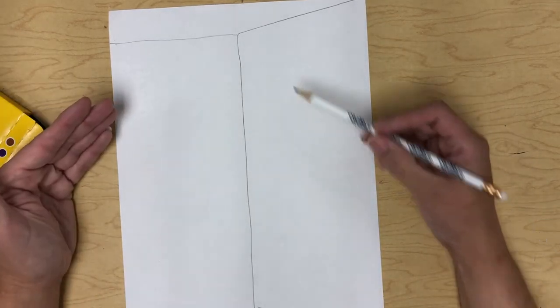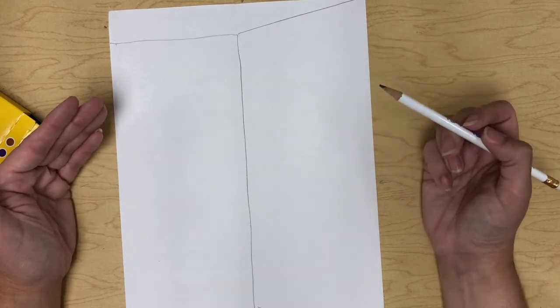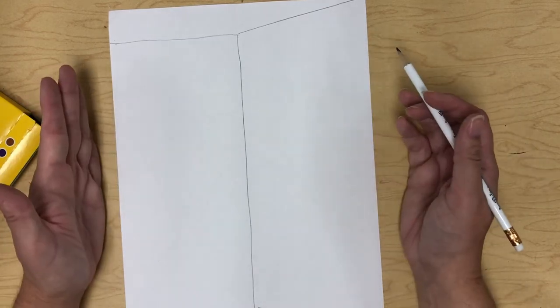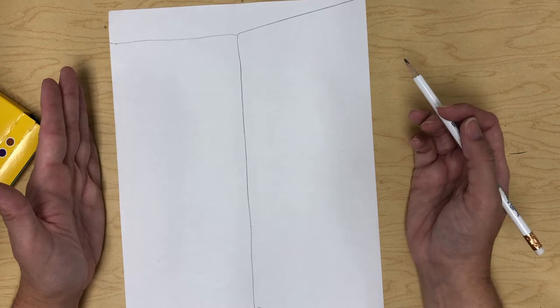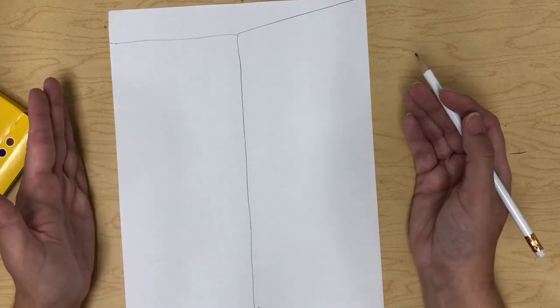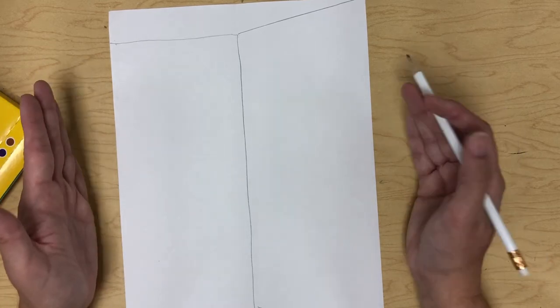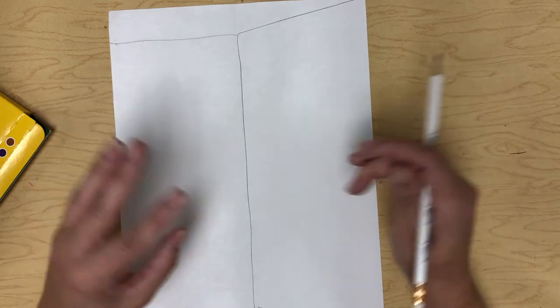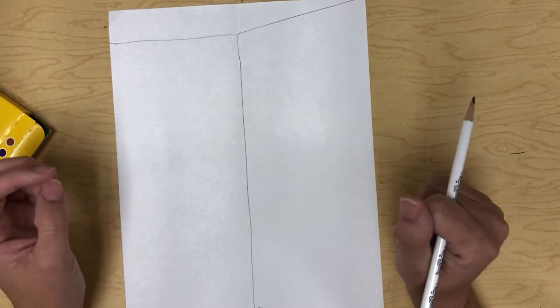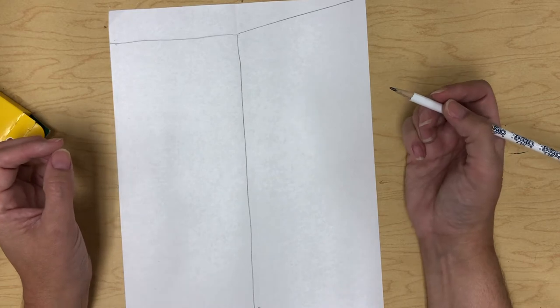Now you might notice that I'm drawing a lot darker than normal. I'm pushing harder with my pencil so you can see it in the video. You're going to want to draw really light until you have it right, meaning how you want it. You can always go back over and darken your pencil lines.